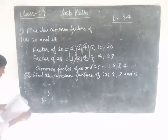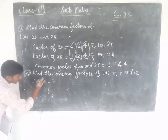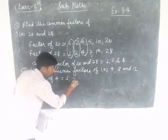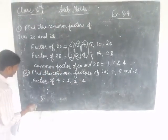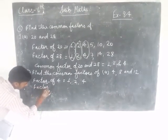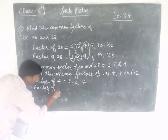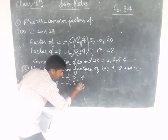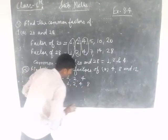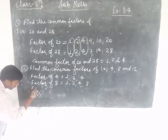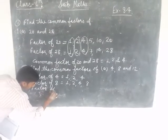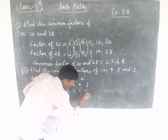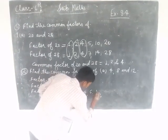First we find the factor of 4. Factor of 4 is equal to 1, 2, and 4. Factor of 8 is equal to 1, 2, 4, and 8. Then the factor of 12 is equal to 1, 2, 3, 4, 6, and 10.